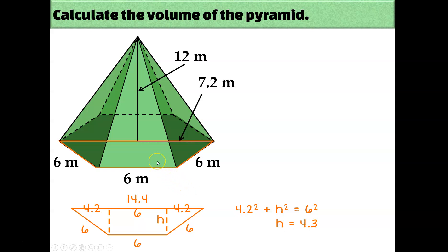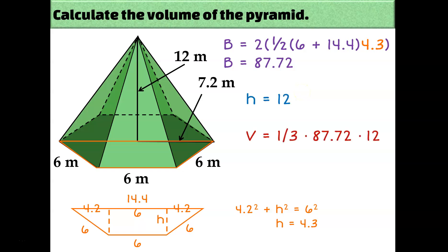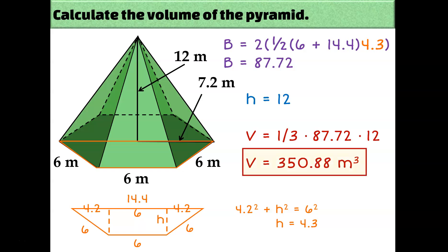Now we're ready to calculate the area of the base. The area of the trapezoid is equal to one-half times (base 1 plus base 2) times the height. But remember there are two of these trapezoids that make up the entire hexagonal base, so I'll say 2 times one-half times (base 1 plus base 2) times the height. Type all that into your calculator and you should get the area of the base to be about 87.72 square meters. We're told the height of this pyramid is 12 meters, so the volume is one-third of 87.72 times 12, which equals 350.9 cubic meters.